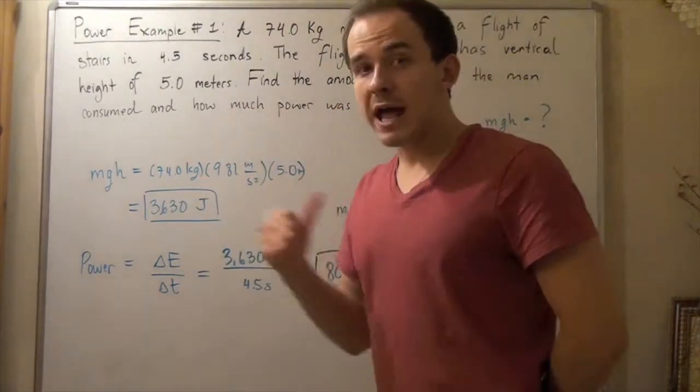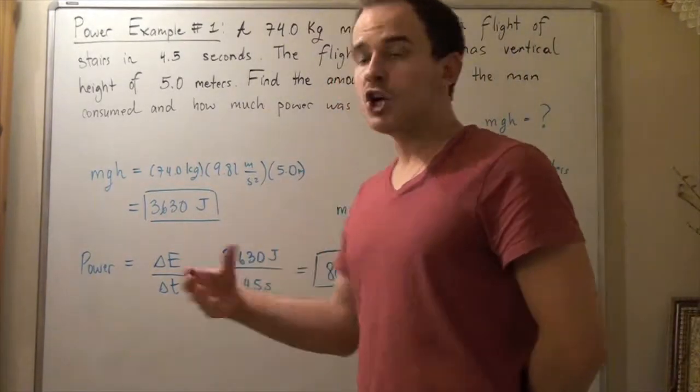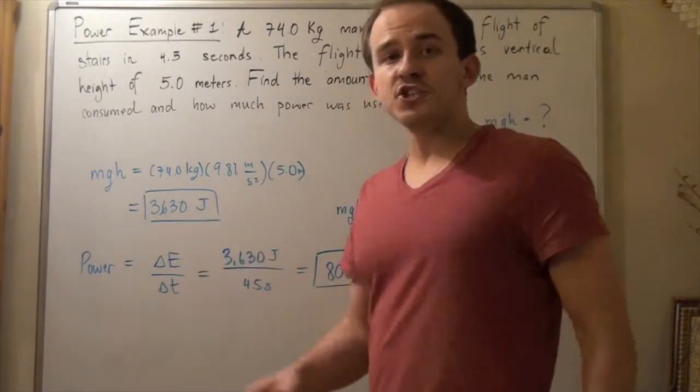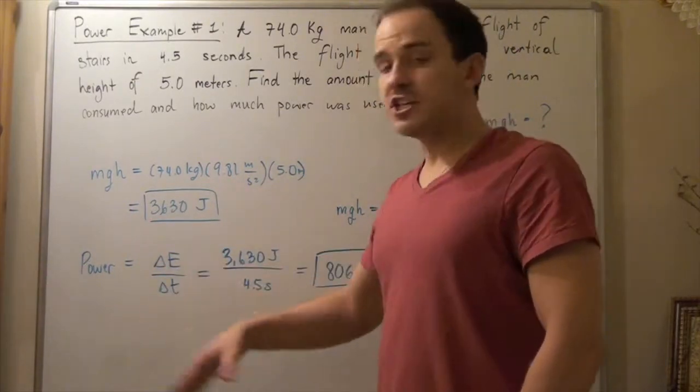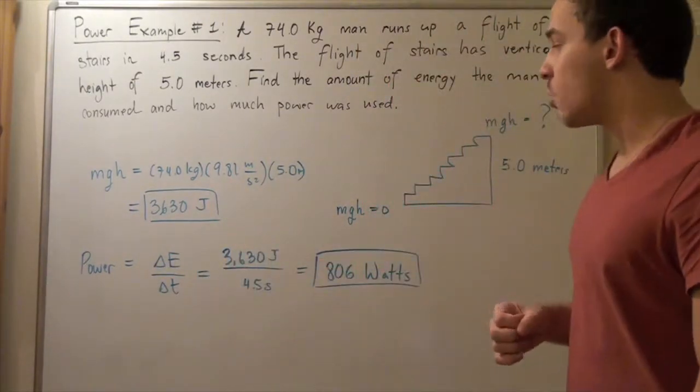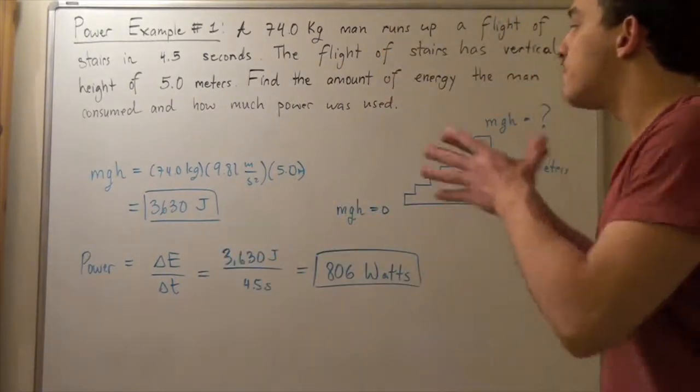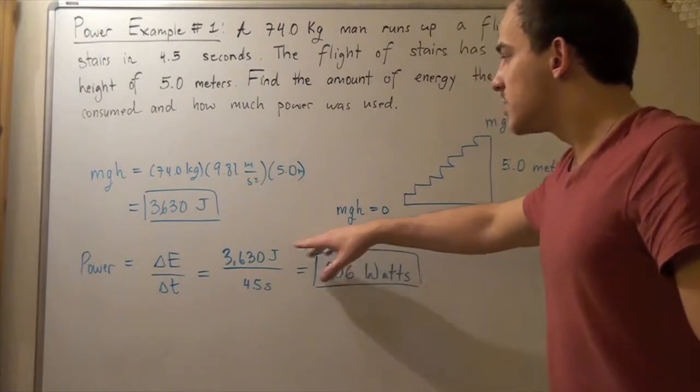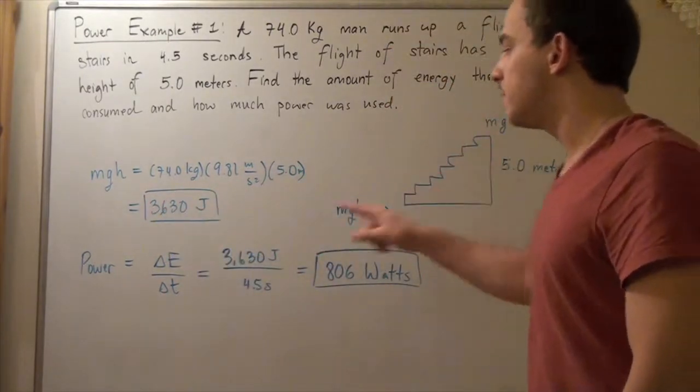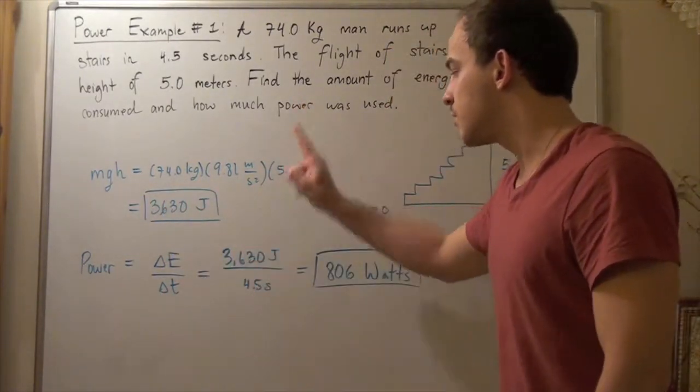To find the power output, we simply use our formula for power which states that the change in energy divided by change in time equals our power. In our case, our final energy is this, our initial energy is zero. So, this minus zero is simply 3630 joules.